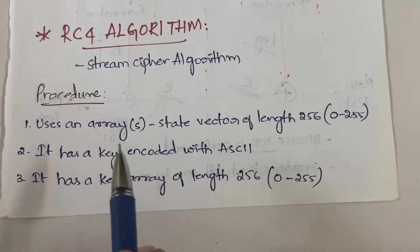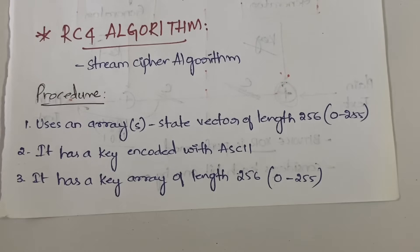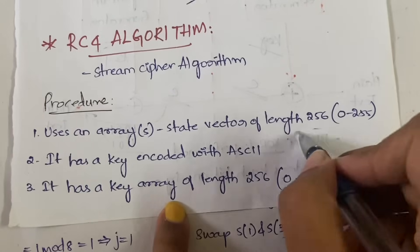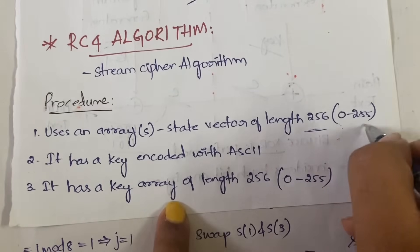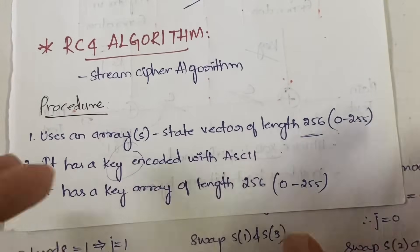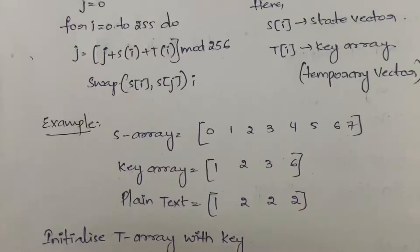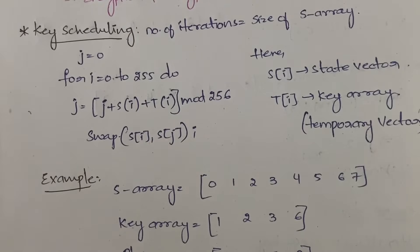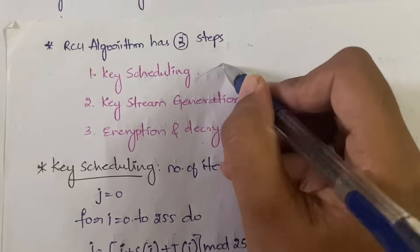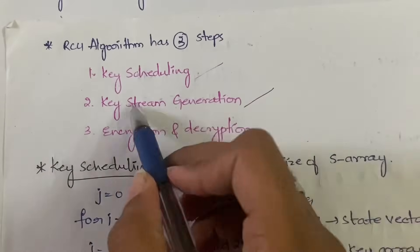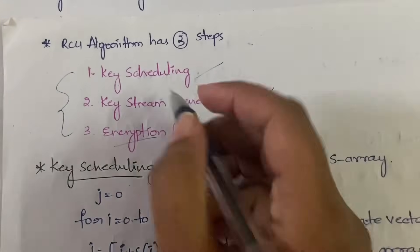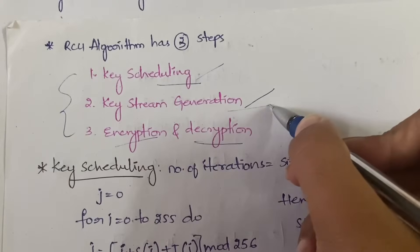The RC4 procedure uses an array S, which is the state vector, of length 256 bits, with indices from 0 to 255. There is also a key array of the same length. The RC4 algorithm has three steps: first is key scheduling, second is key stream generation, and third is encryption and decryption.